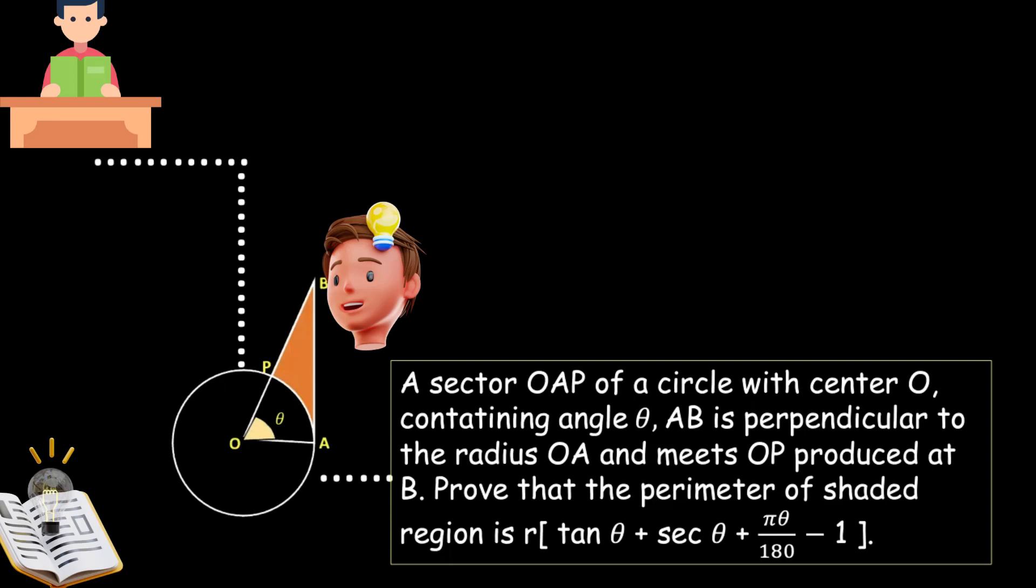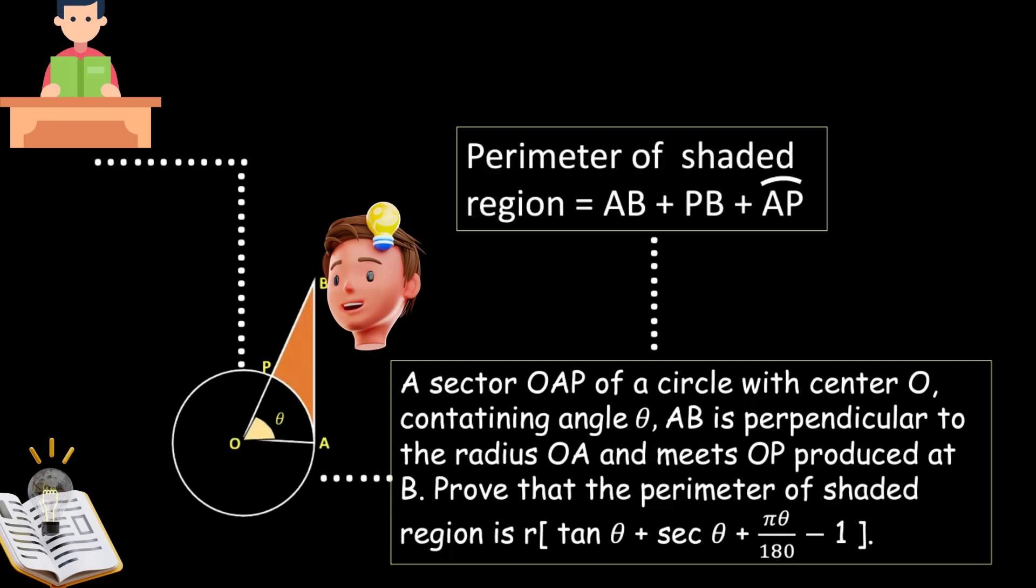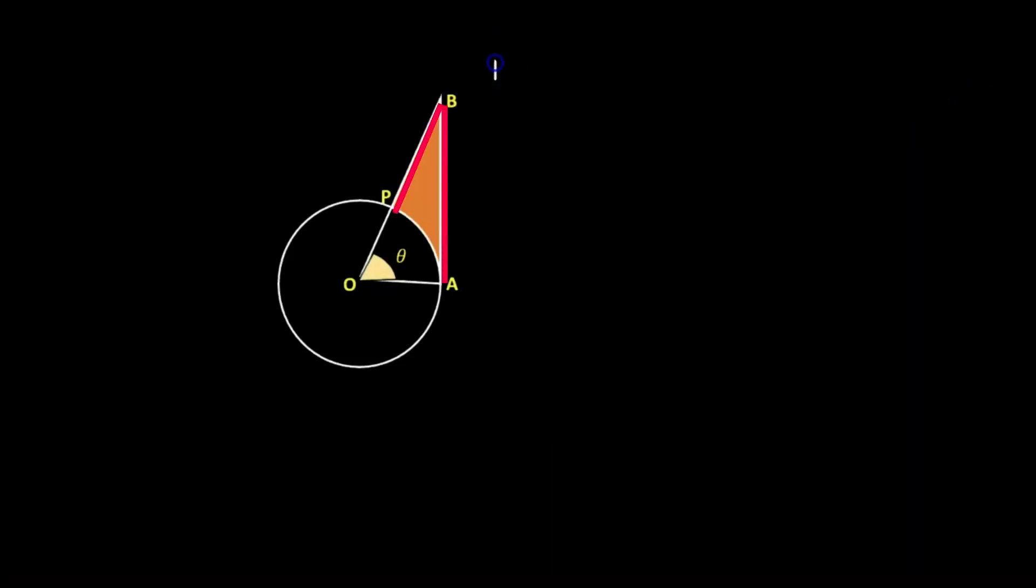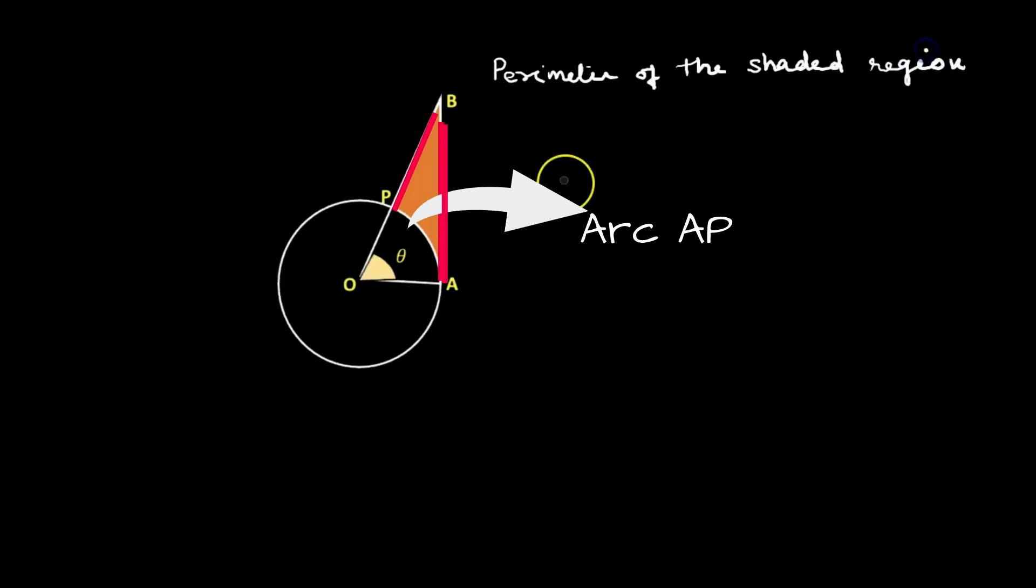Friends, perimeter of shaded region equals to AB plus PB plus arc AP. Let's solve the problem. So the perimeter of the shaded region equals to AB plus PB plus arc AP.